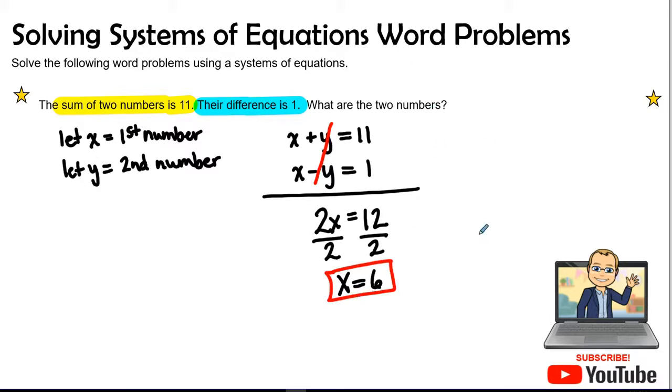Now when we finish, we're going to go ahead and plug in that X value into the first equation. So I could plug it into the second equation. It does not matter, but I kind of want to deal with the least amount of negatives as possible.